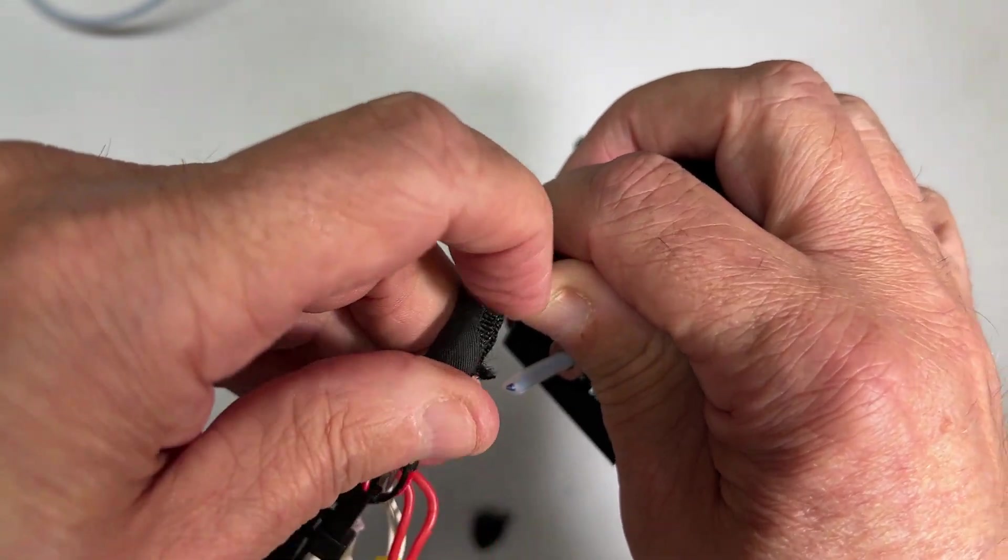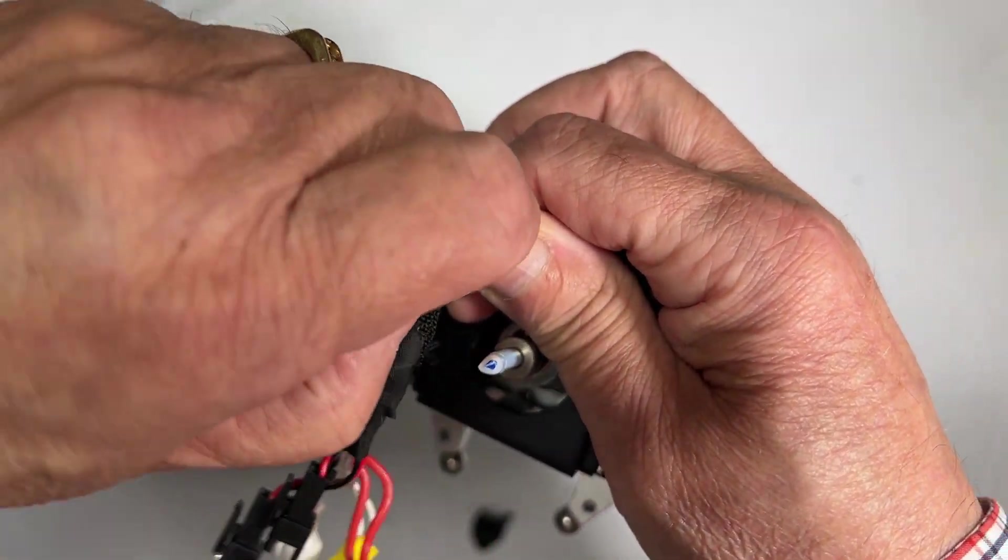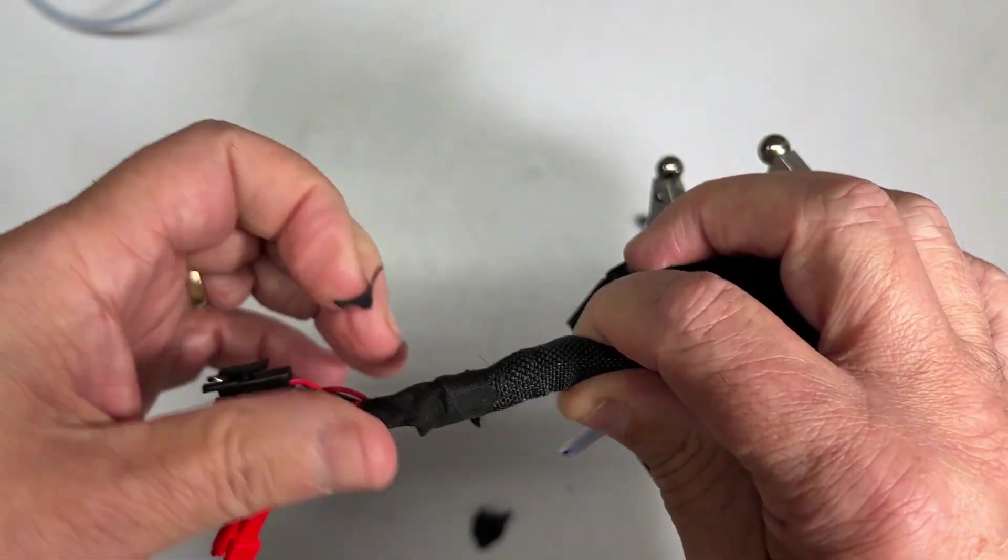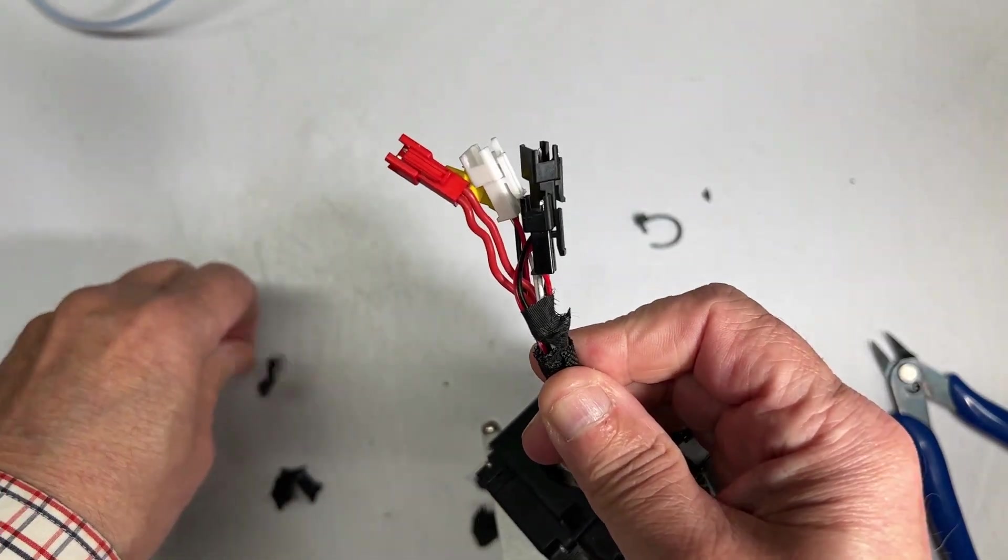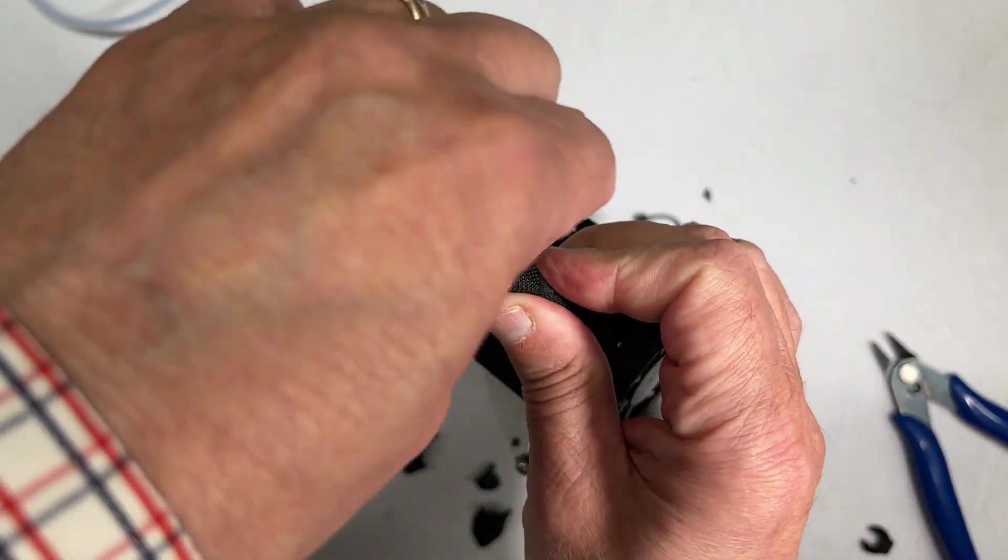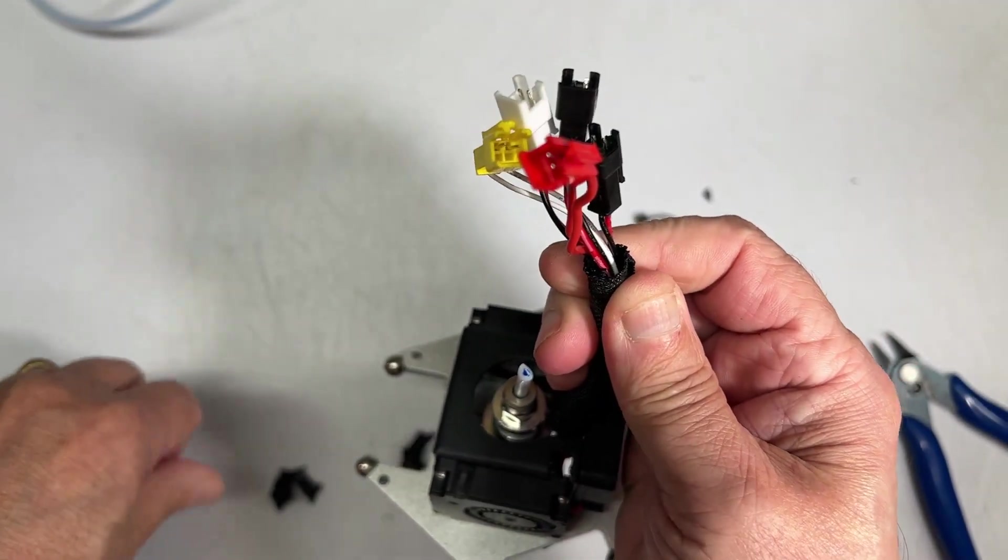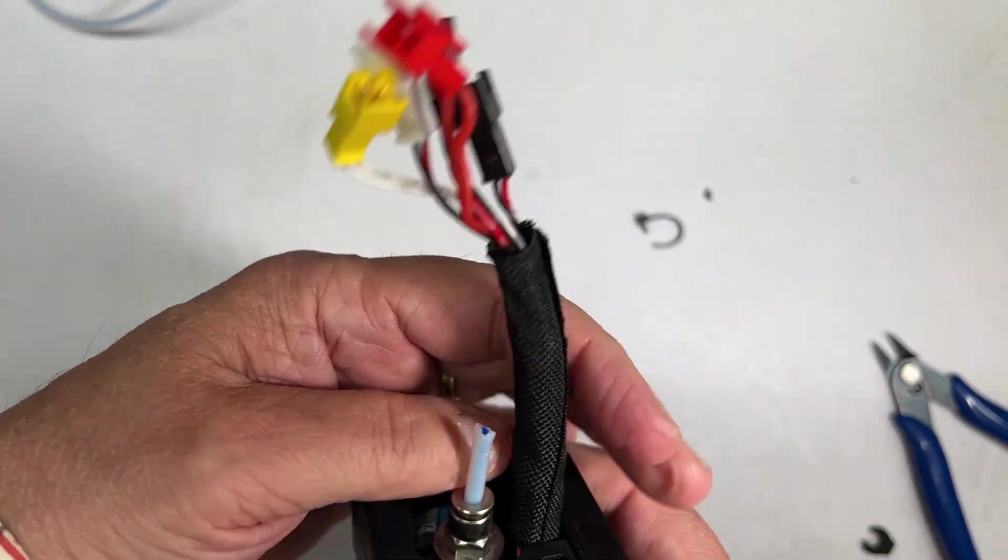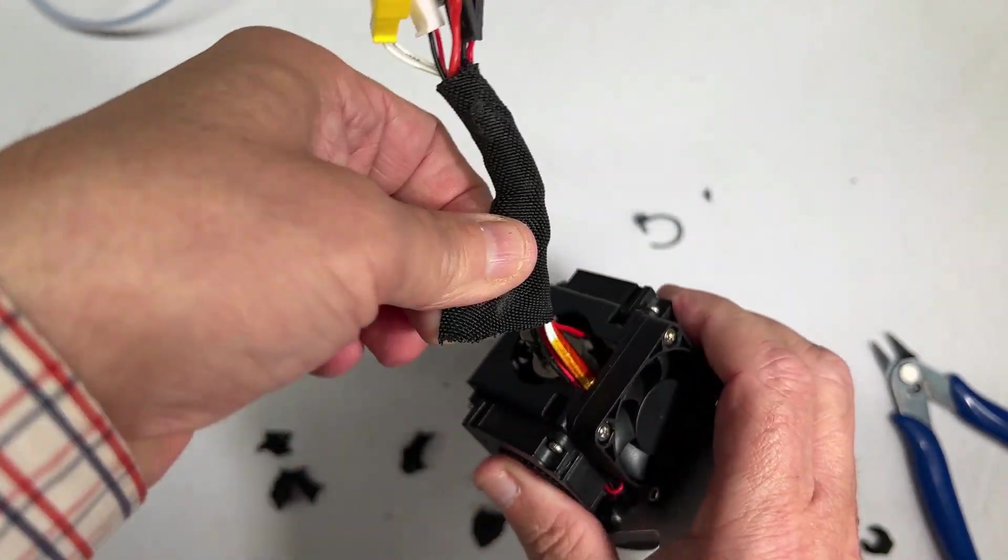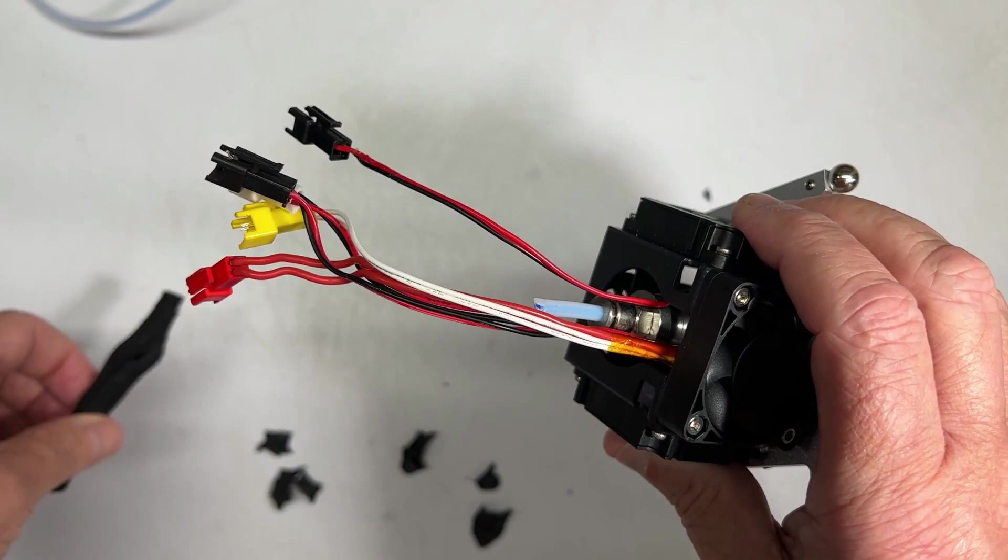This one we're not going to cut off because we want to reuse that later. Once you get all that tape removed, then it's easy just to remove this covering. Just pull and it'll come right off.